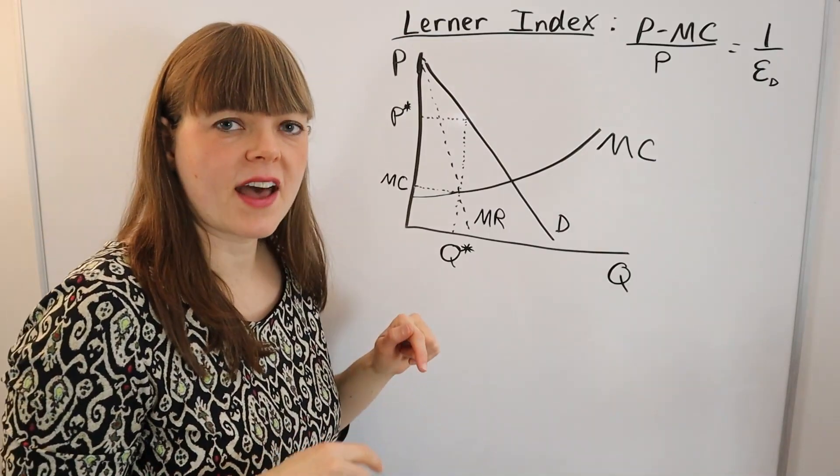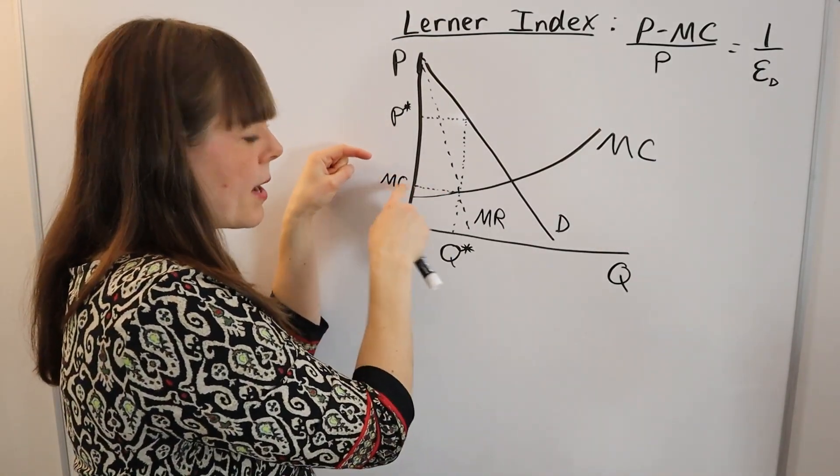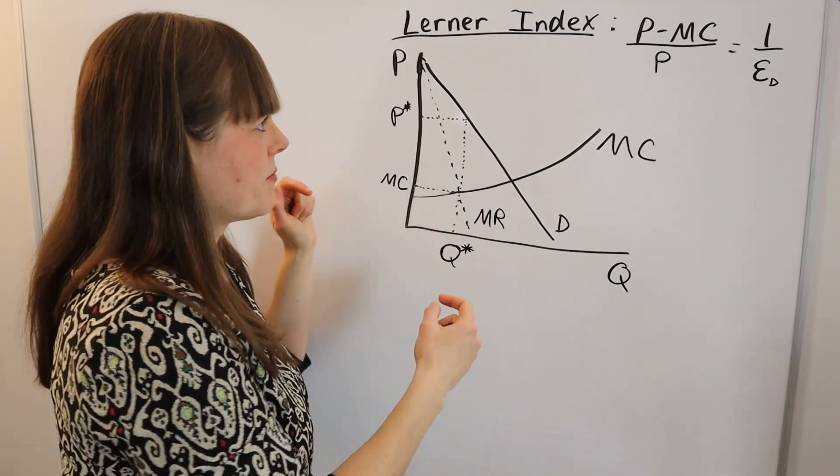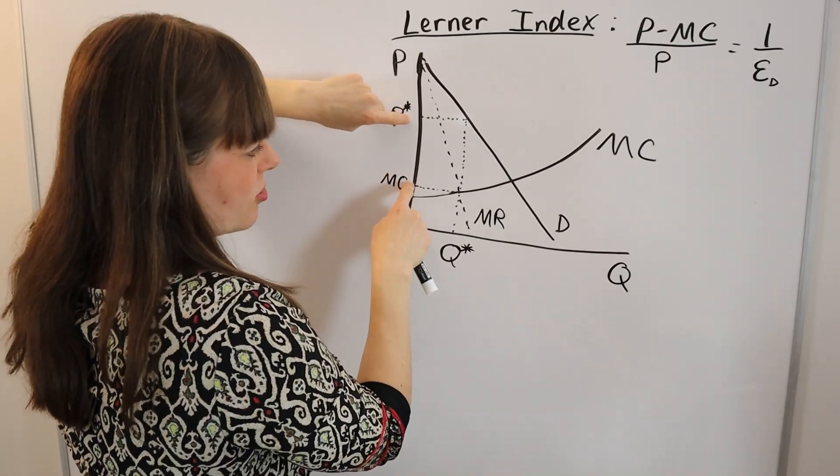One way of interpreting this is the percentage of price that is a markup above marginal cost. The denominator is price, the numerator is price minus marginal cost.